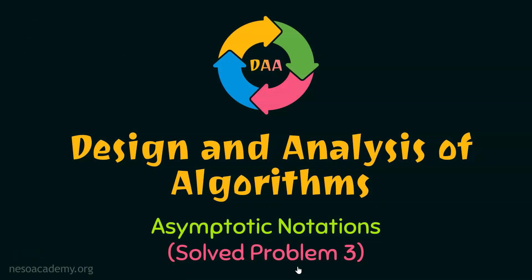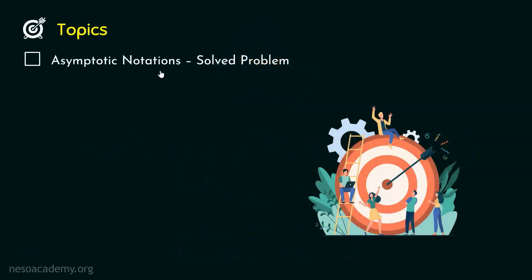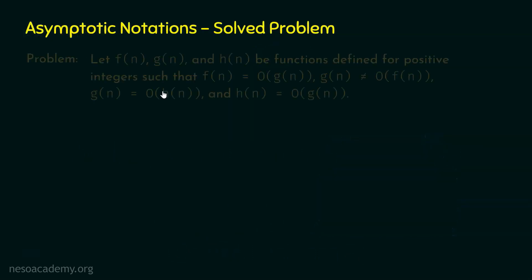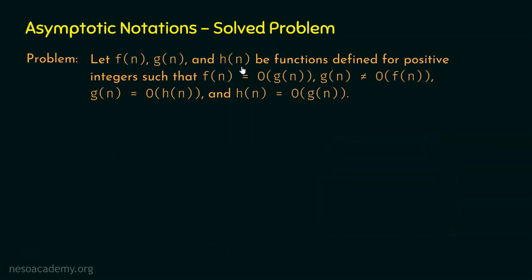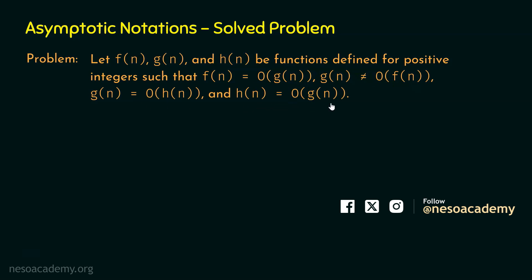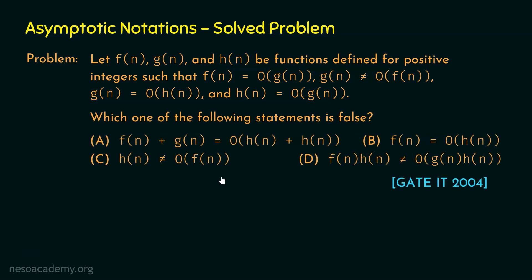Let's discuss problem number 3 on asymptotic notations. Here is the problem. Let f(n), g(n) and h(n) be functions defined for positive integers such that f(n) is big O of g(n), g(n) is not big O of f(n), g(n) is big O of h(n) and h(n) is big O of g(n). Which one of the following statements is false? We need to identify which of these statements is false.